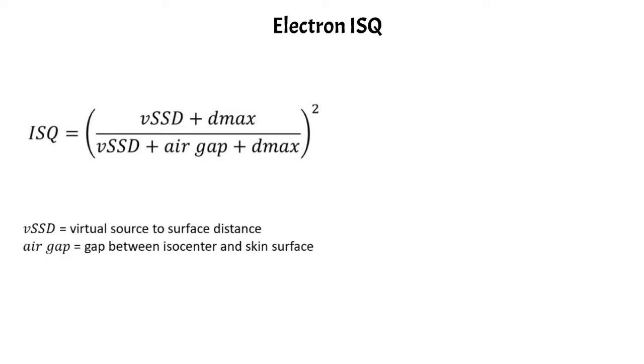The vSSD is your virtual source to surface distance, and then your air gap is the gap between the isocenter and the skin surface. So you use the virtual SSD in your inverse square correction rather than the actual SSD.